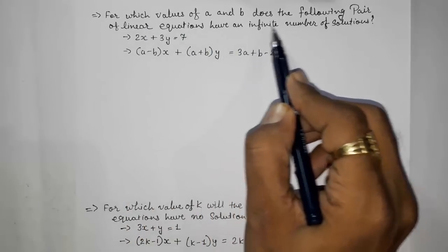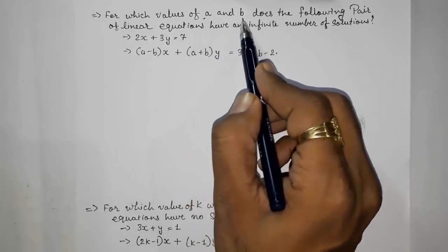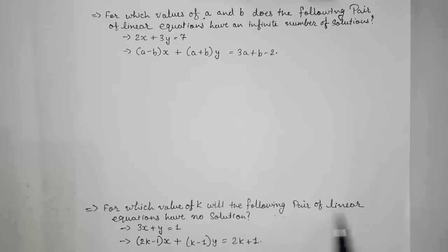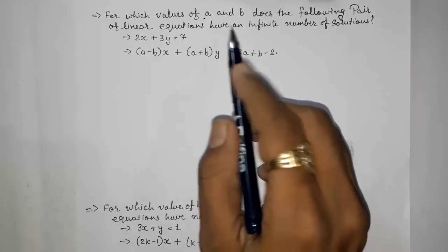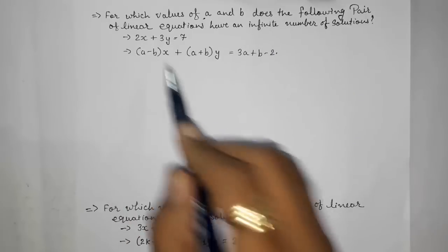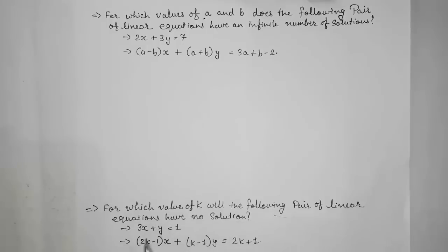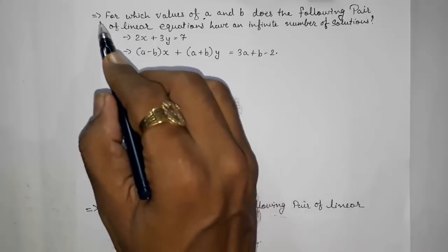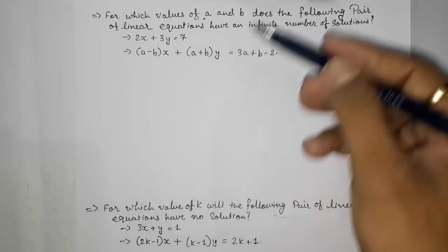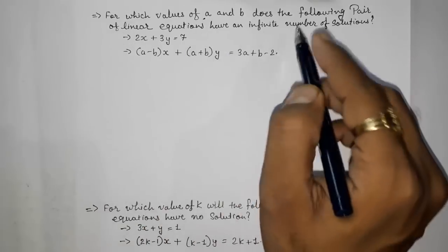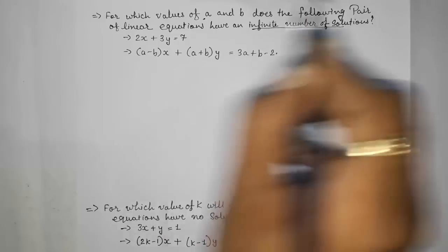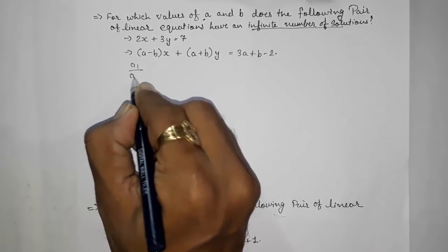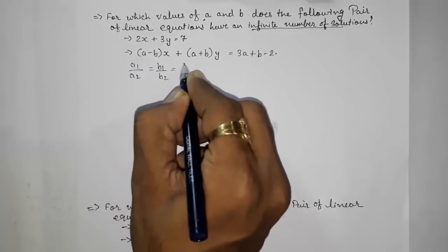After that, they may directly tell you that two equations have infinite solutions and ask you to find unknown variables a and b. Or they may tell you there are no solutions and ask you to find k. When there are infinite solutions they give two unknowns; when there is no solution they give only one unknown to find. This is one of the most important question types — you will get one of these in your board exam.